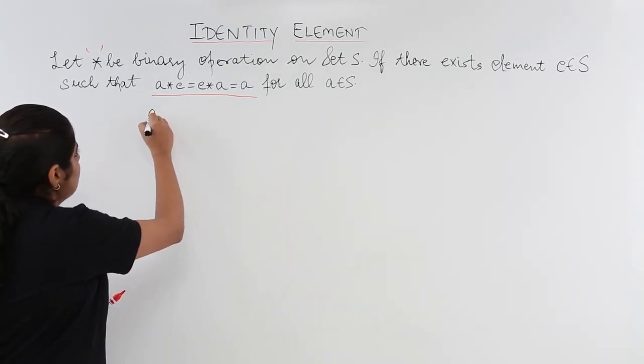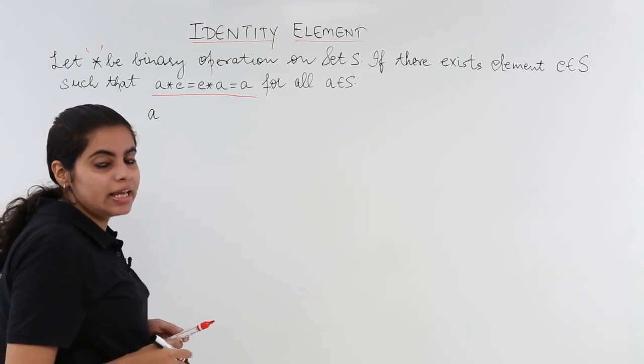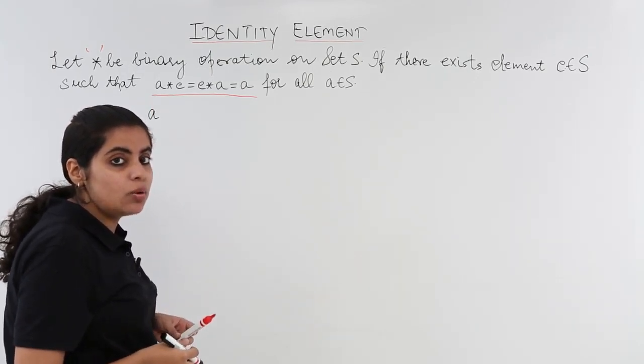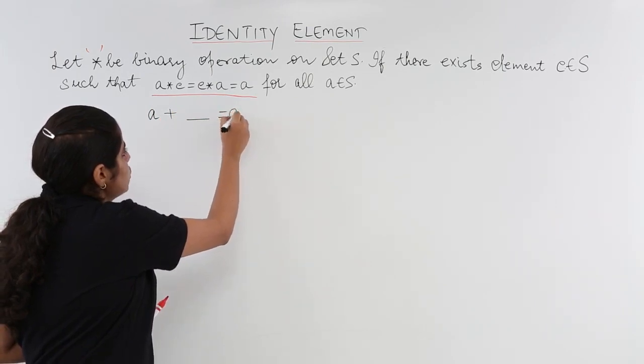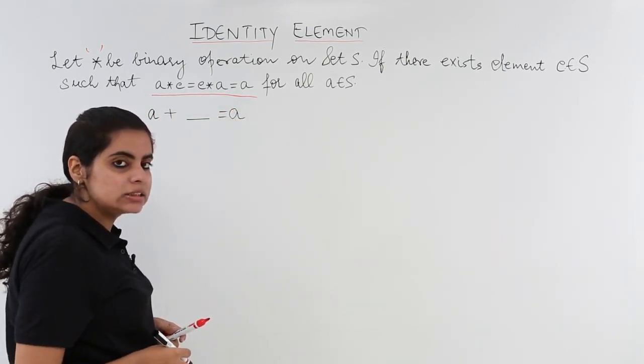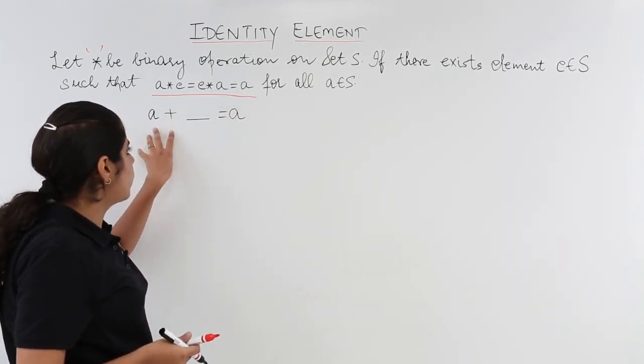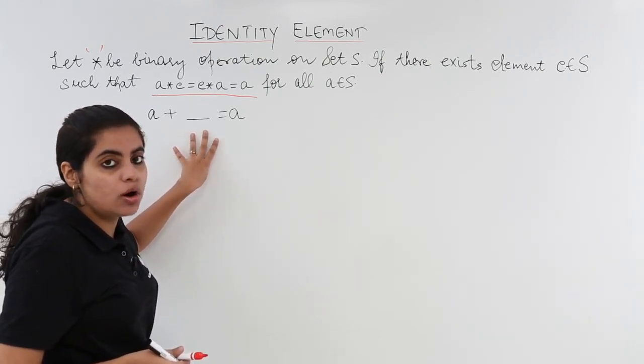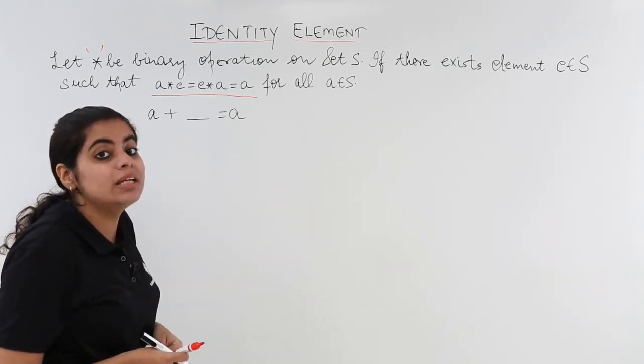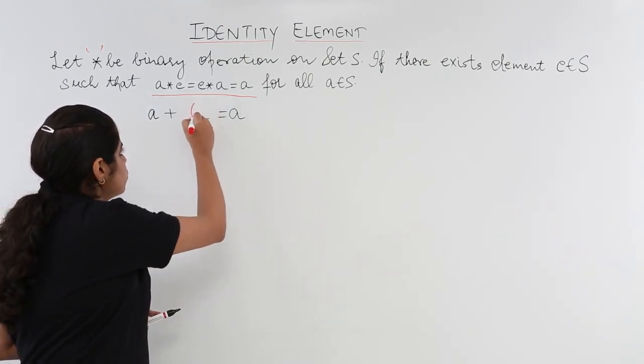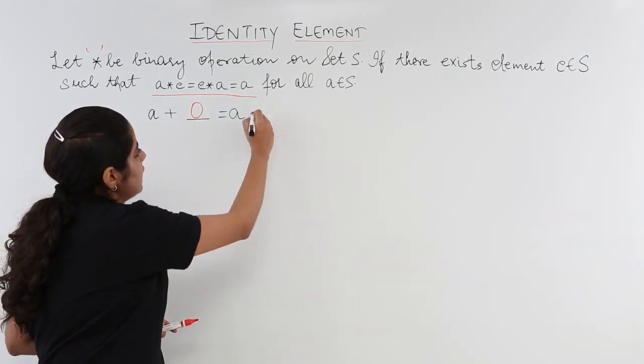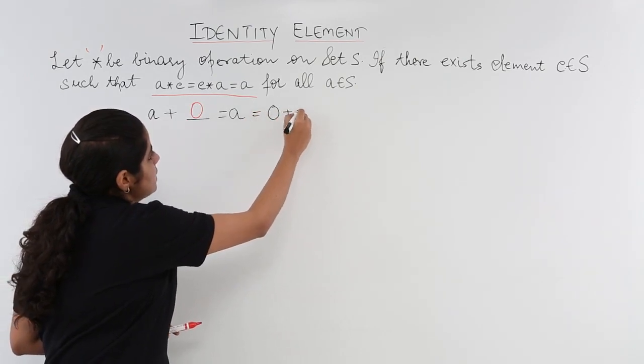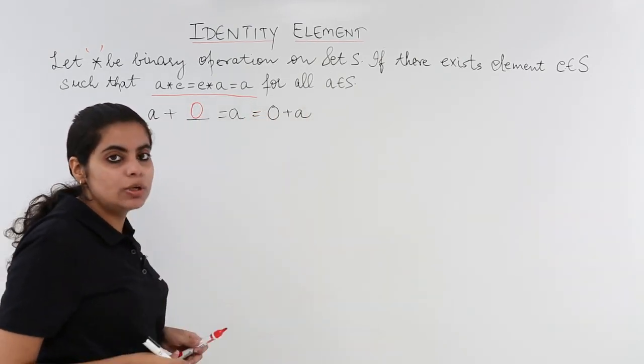Suppose I have an element as a. Now what must be added to a to give me back a? That means what should be the sum of a with something to give me back a only. So the element that needs to be added is 0.